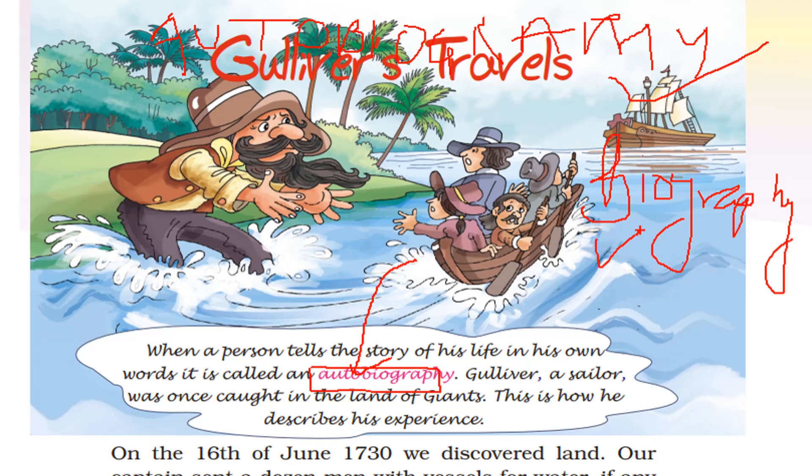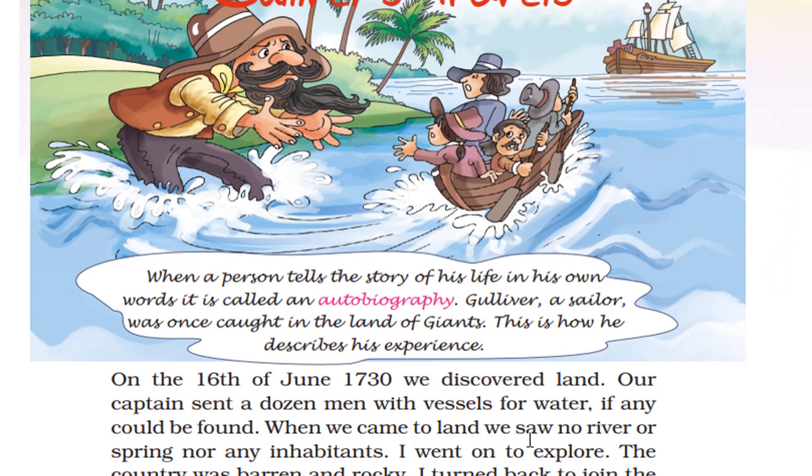For example, aap sabhī log cricketer Mr. Mahendra Singh Dhoni ko jante hain. Agar woh apni life ke baare mein khud likhte hain, that will be known as autobiography. Lekin agar koi aur Mahendra Singh Dhoni ke baare mein likhta hai, so that will be known as biography. If I am writing my experiences then that is autobiography; if someone else is writing my experience, that is biography.